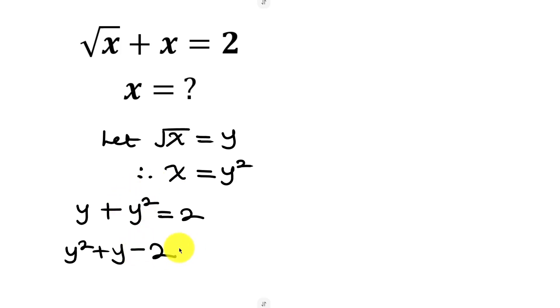This equals zero. We can factorize this quadratic equation by looking for two numbers that multiply to -2 and add up to 1. These two numbers are 2 and -1.